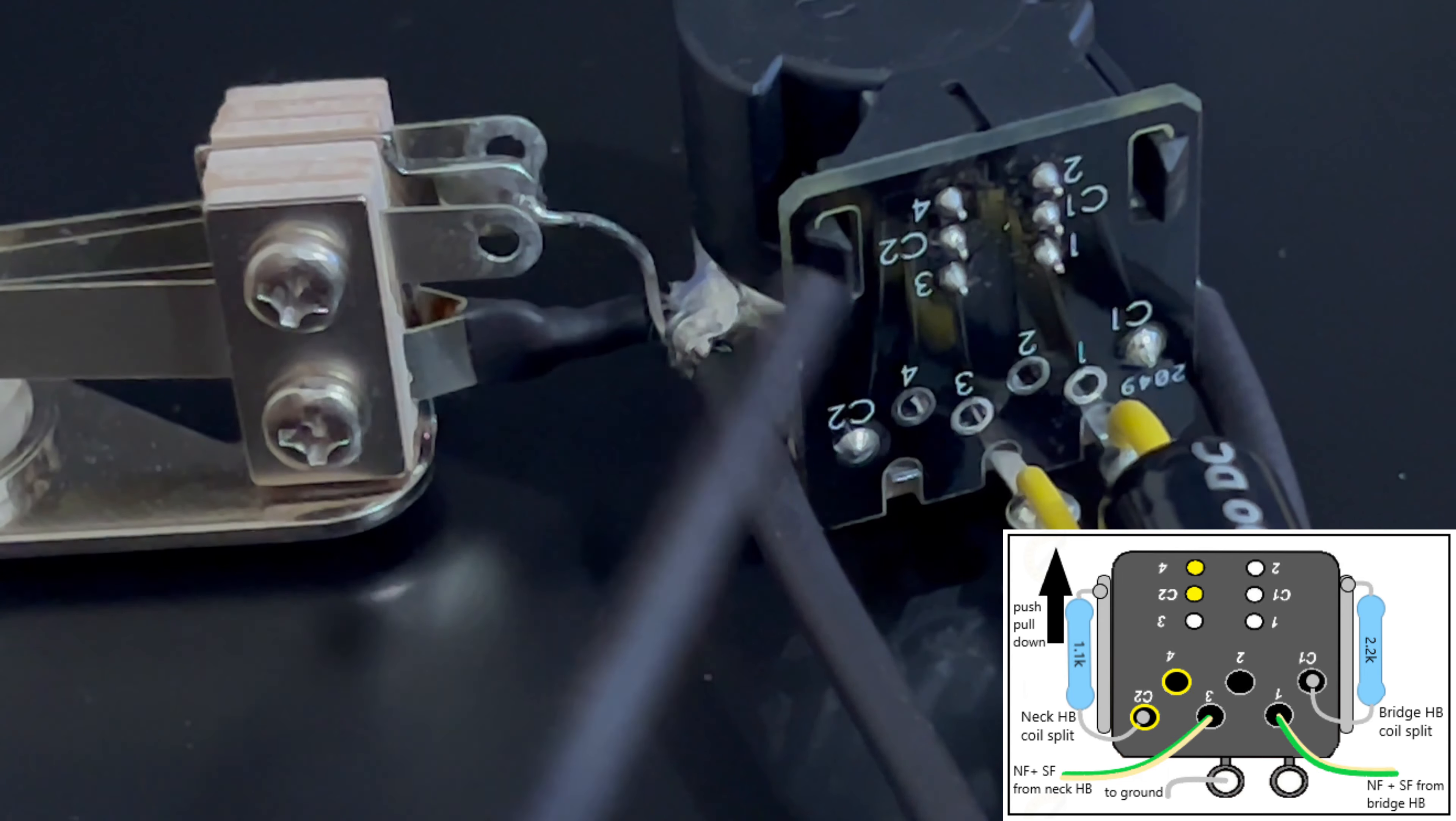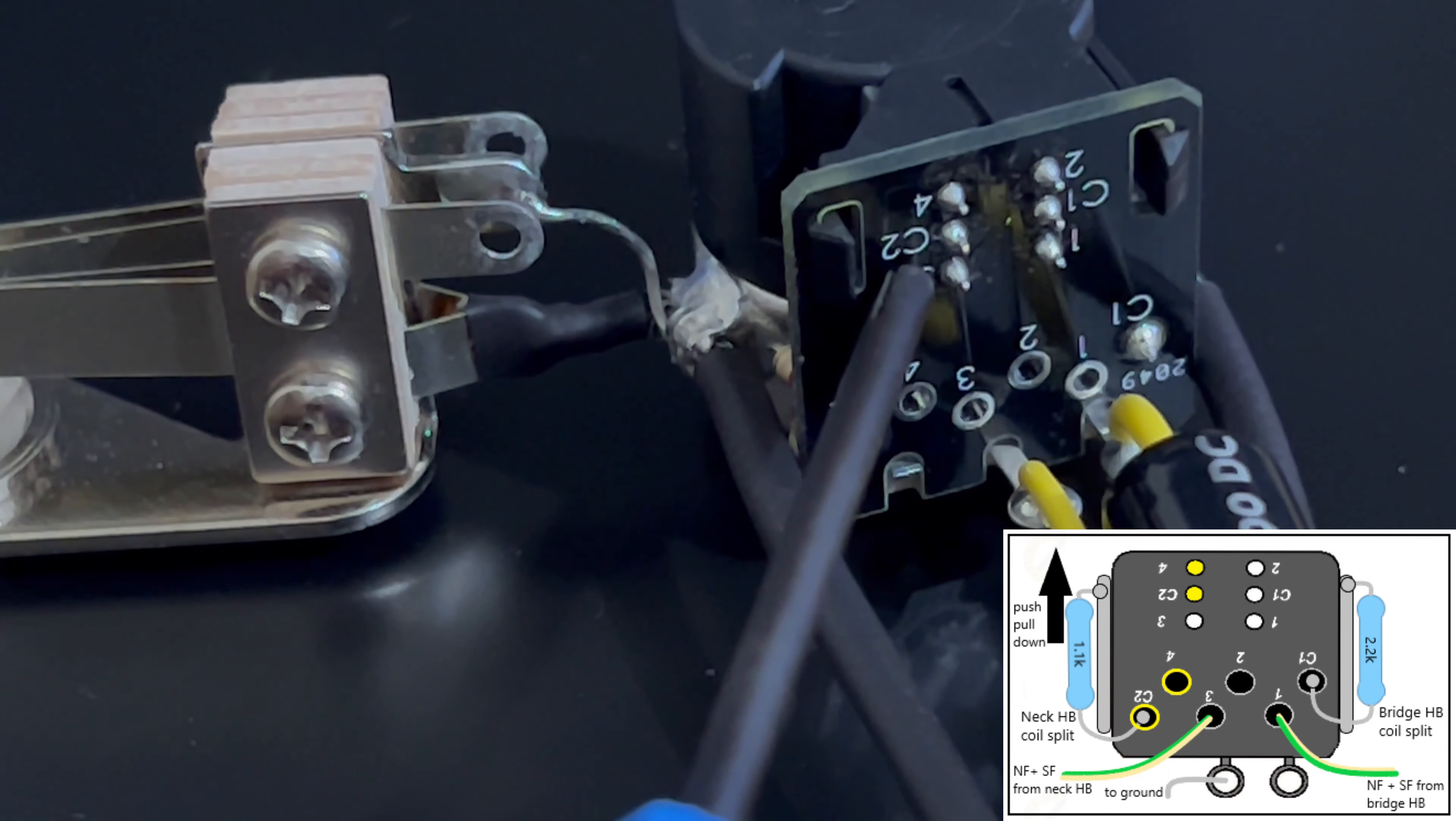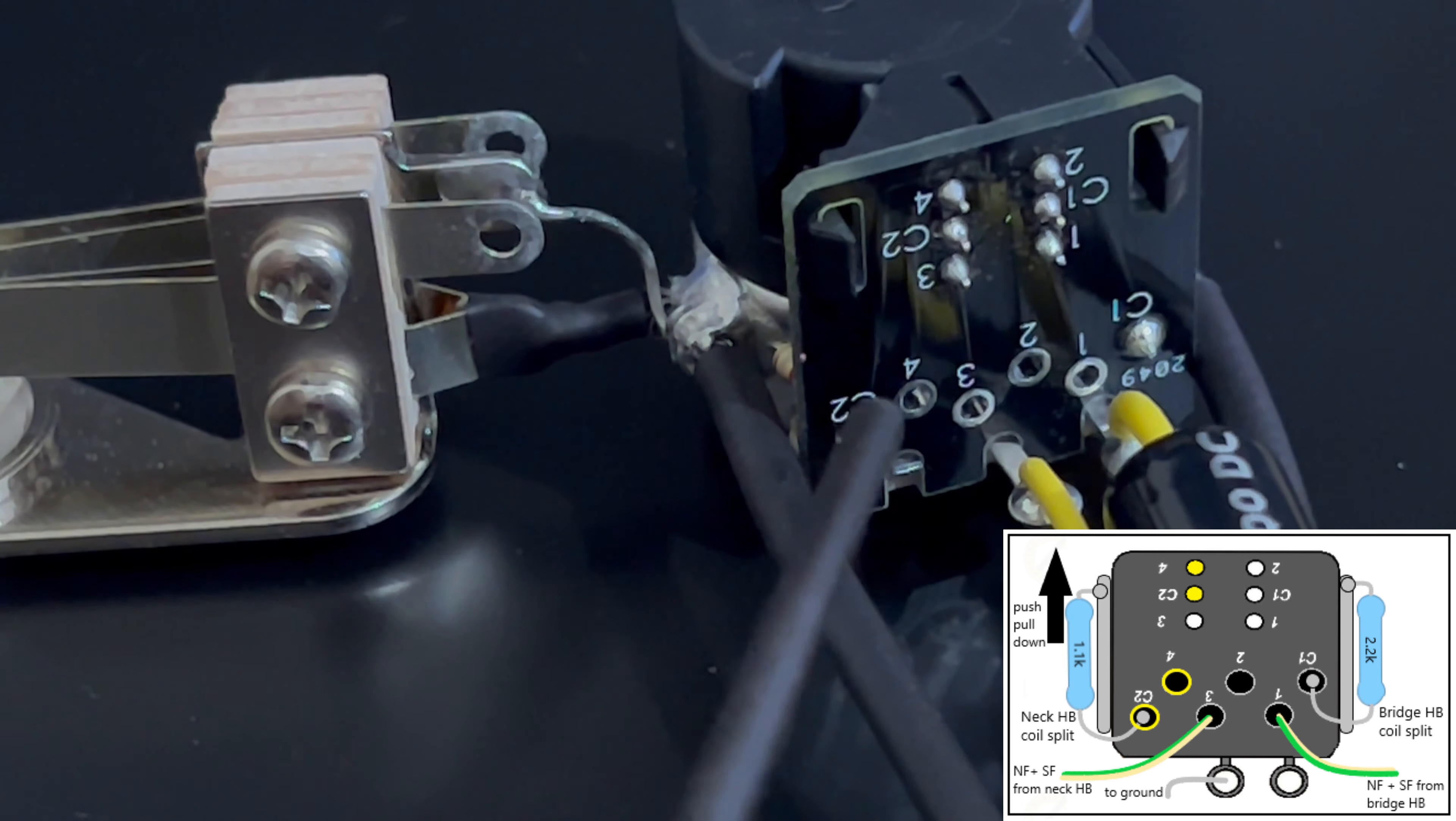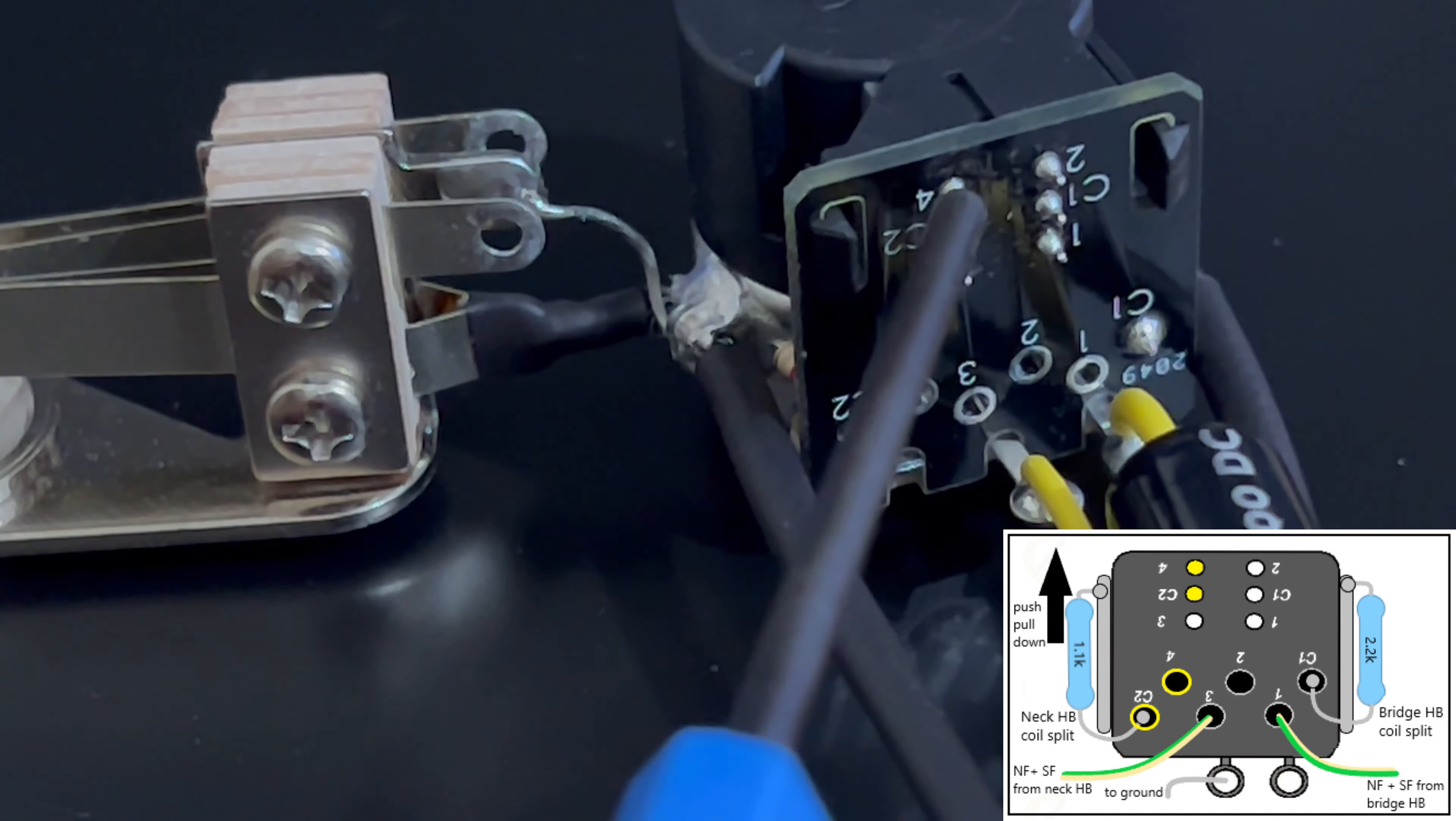Basically, when the push-pull is in the down position, C2, which is our route to ground via the resistor, is connected to hole 4, which obviously has nothing connected to it, so nothing happens.